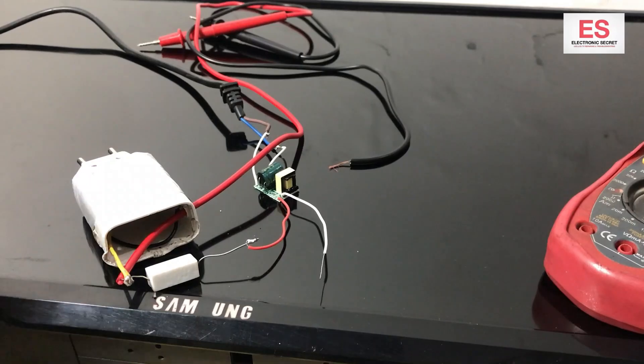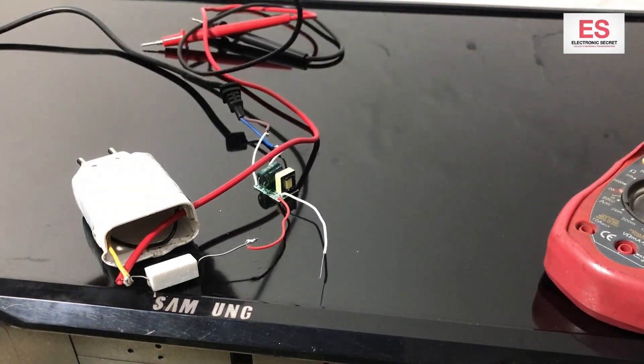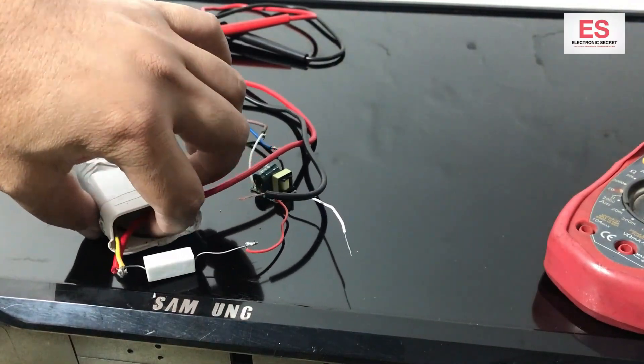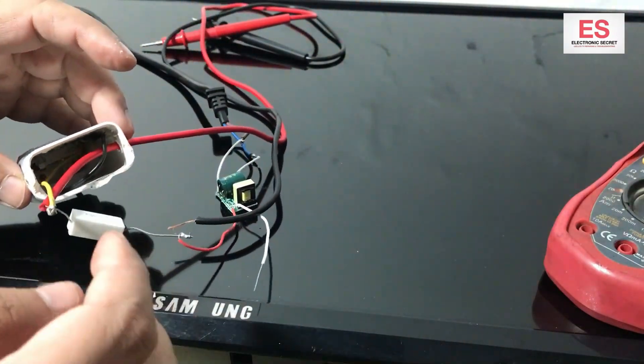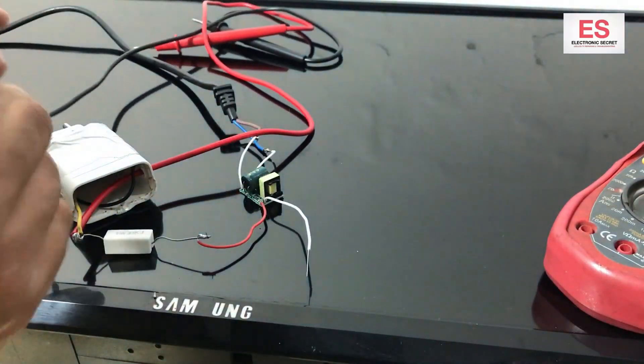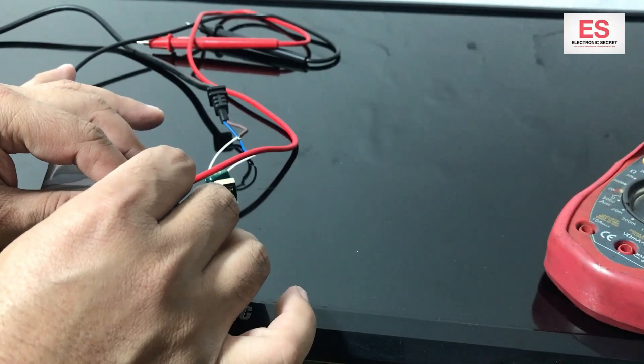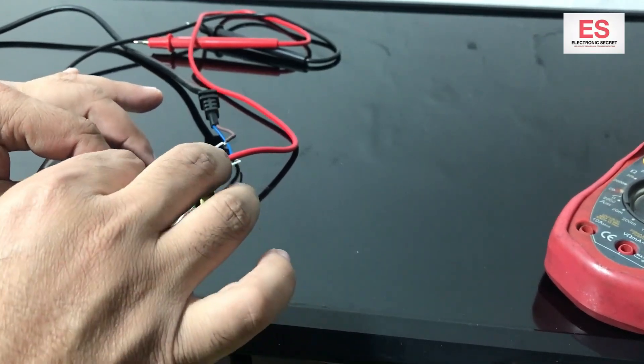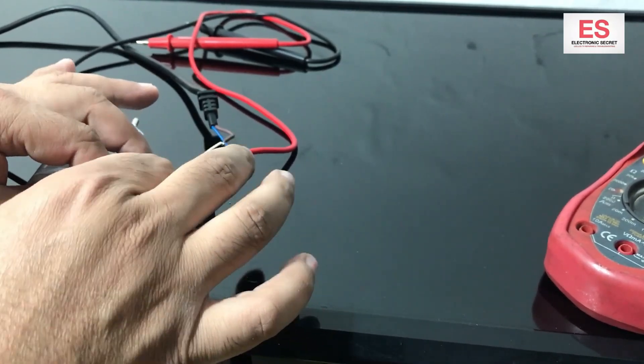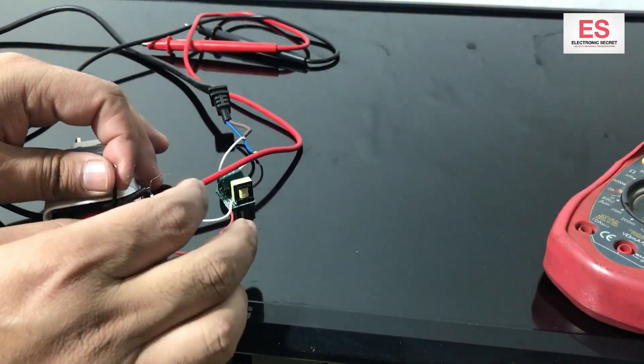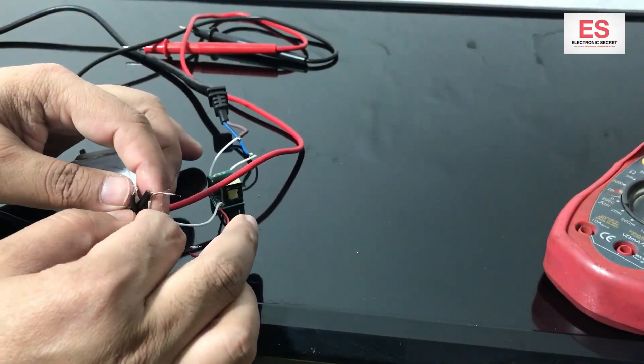Take the black probe, insert it from the hole that I have made earlier in the casing. Now take the second output wire that is ground, joint them. Take the black wire off the casing and solder them.